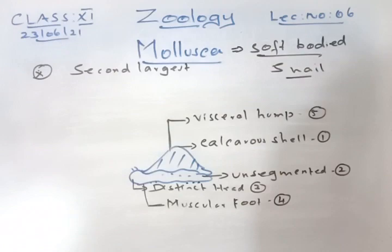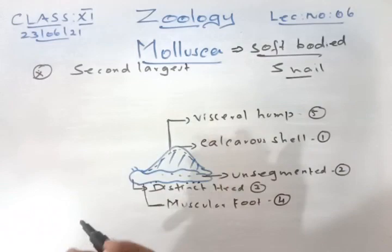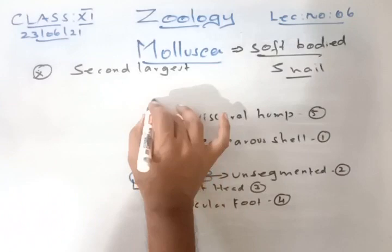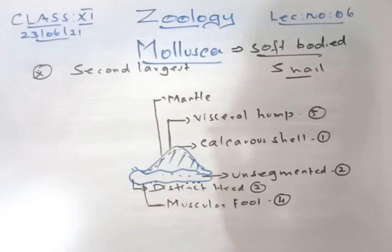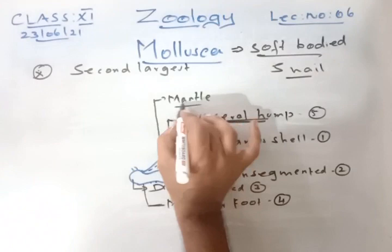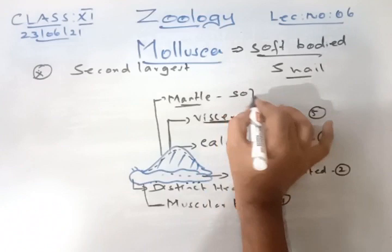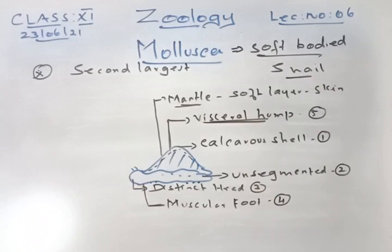Above the visceral hump there is a cover called the mantle — a very soft layer of skin. If you open the visceral hump, inside you will find the mantle. This is point number six.